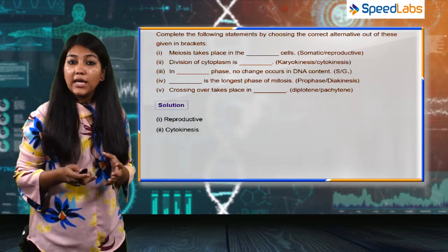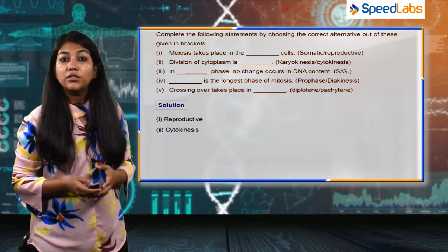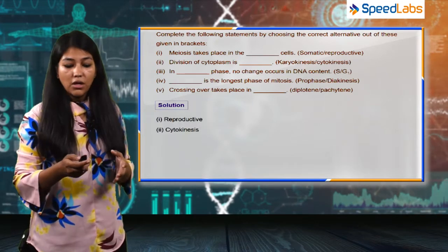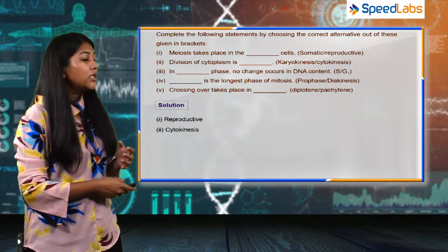We know that the DNA or the genetic material is getting duplicated in the S phase. So the answer to this part is G1 phase.